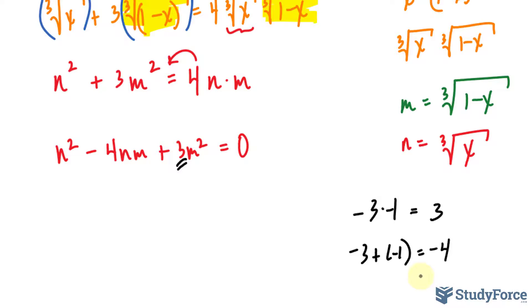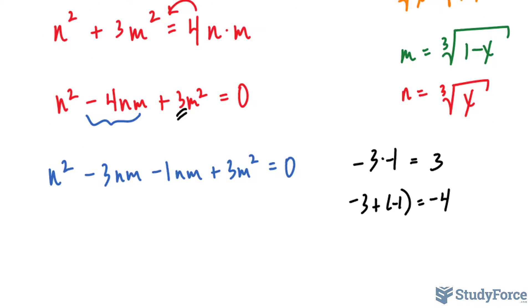That's the correct combination which will be used to decompose the middle term so that we have n squared minus 3nm minus 1nm plus 3m squared is equal to 0. Now we factor by grouping.